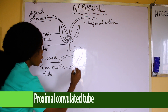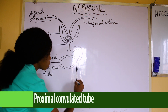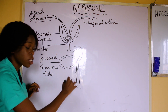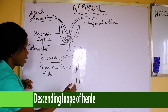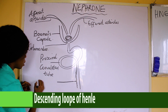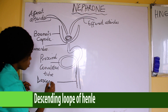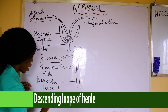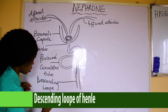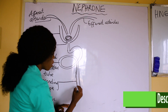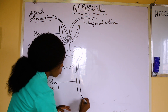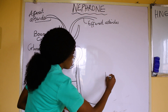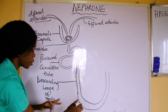After the Proximal Convoluted Tube, a tube is coming down. It's descending, so this is the descending loop of Henle. We bring it down like this and label it the descending loop of Henle. Then here we now have a bend — coming down, we have a bend. This is the loop of Henle proper, known as the apparent bend.